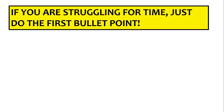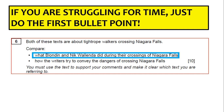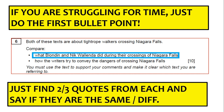If you're struggling for time and you've only got five minutes instead of your 13 to 15 minutes, just answer the first bullet point. Find five or six quotes saying what they both said about the crossings and don't talk about writer's technique. It's better to do as many quotes as you can on the first bullet point than to do just one PE on both bullet points. If you're really struggling, find two or three quotes from each and say if they are the same or different. You could probably get four or five marks out of ten just by doing the first bullet point.